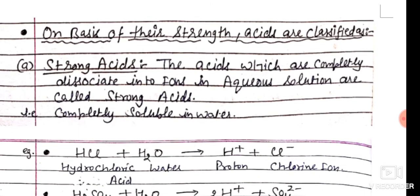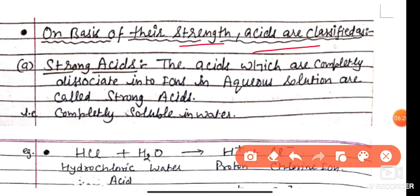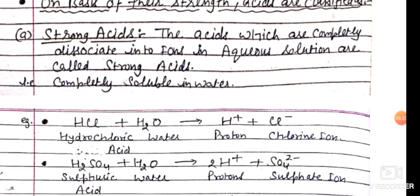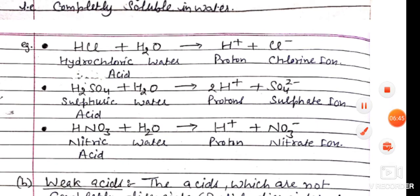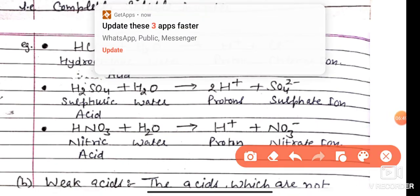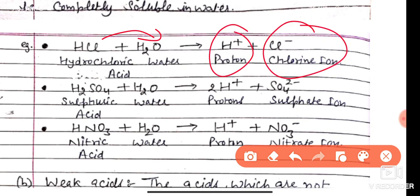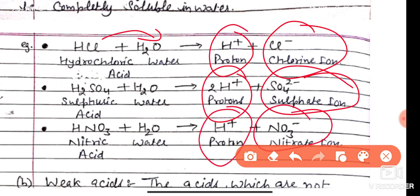Now we classify acids on the basis of their strength — which is stronger and which is weaker. Strong acids are those which completely dissociate into ions in aqueous solution. For example, Hydrochloric acid when dissolved in water purely dissolves to form proton and chloride ion. Sulfuric acid forms H⁺ and sulfate ion. Similarly, Nitric acid forms H⁺ and nitrate ion.